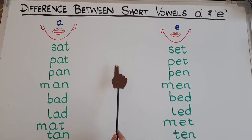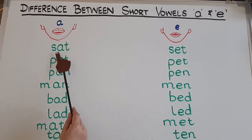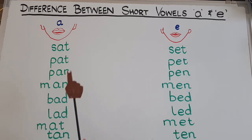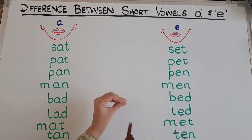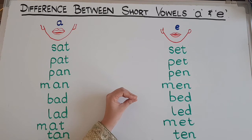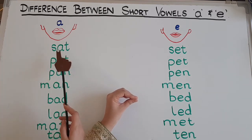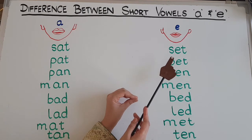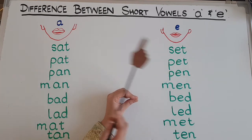Now let's practice some words that have the A and E sounds in them. Try to repeat after me. Suppose this is my mouth — check how much it opens for the A sound and how much it opens for the E sound.